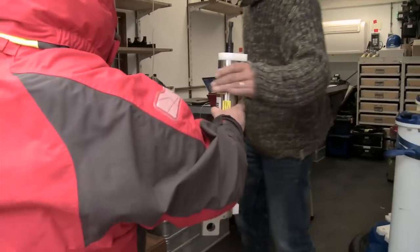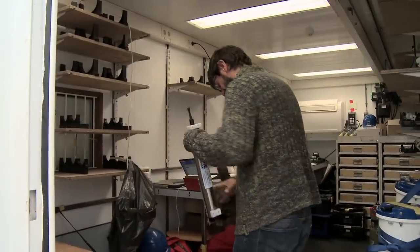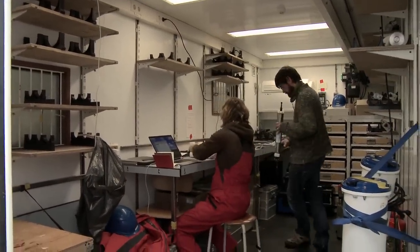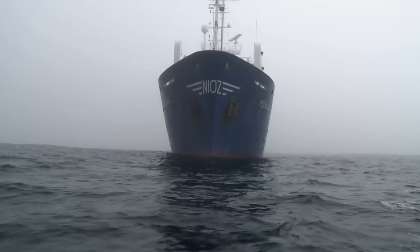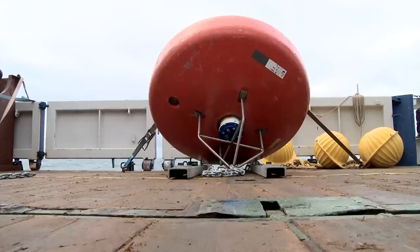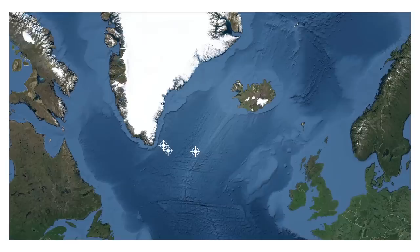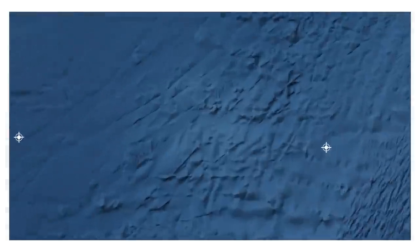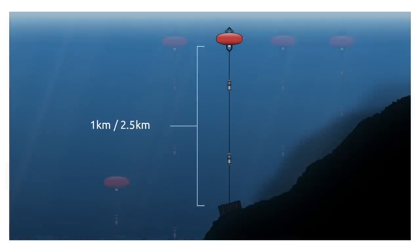In order to really see how changes in the ocean affect climate, and vice versa how climate change may affect ocean currents, we really need long time series. These time series are collected by mooring arrays that are installed at different locations in the Atlantic Ocean.